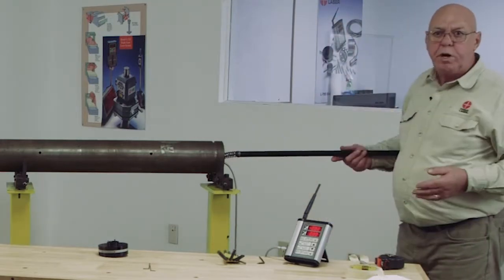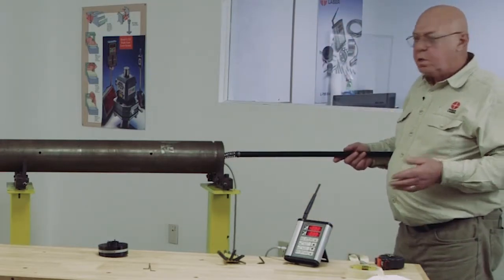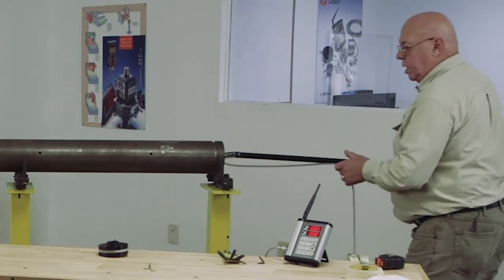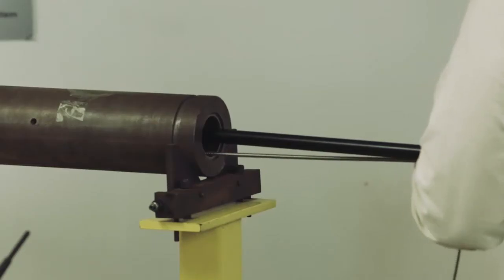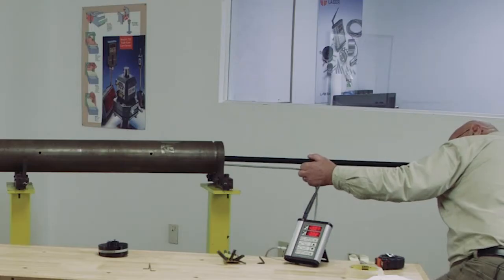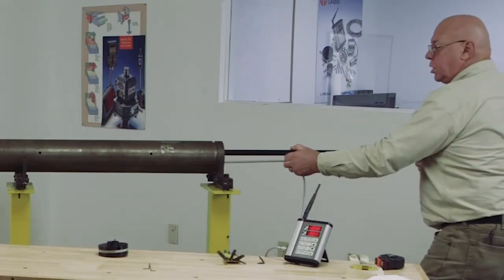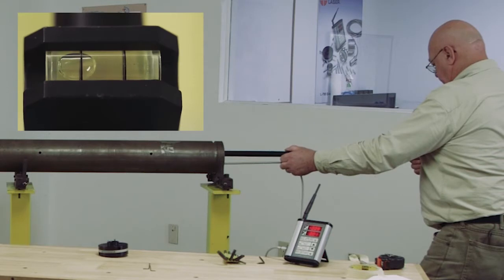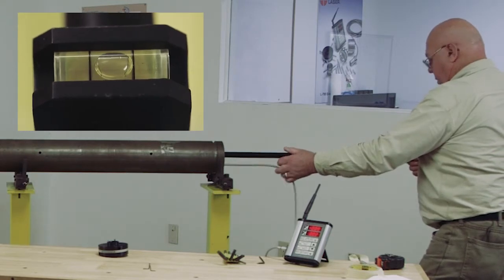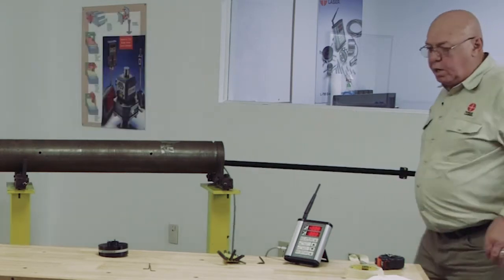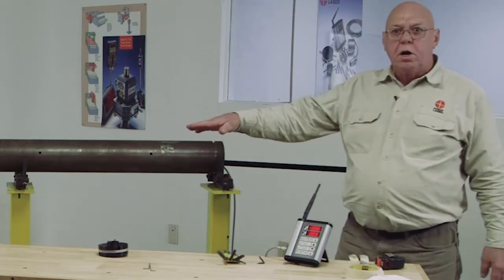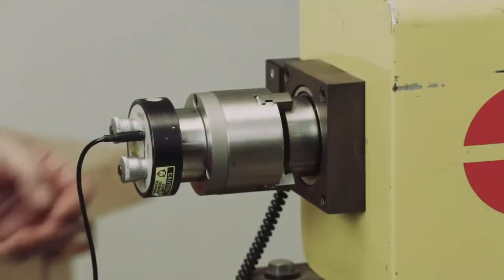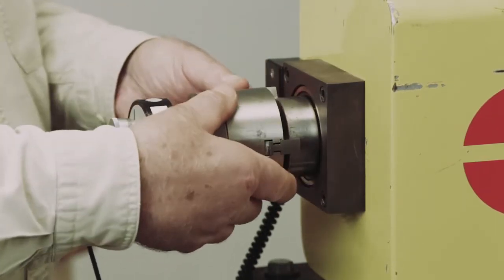Sometimes you have an adjustment point in the middle like I have here. Some barrels don't have that. But if you want to measure it, you can simply move this target in to about the adjustment point there. Using the level, we want to make sure we have the target oriented right. We can see there, we're eight thousandths low and three thousandths to the right. That's pretty much how you do an alignment.